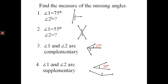Now let's find missing angles. Number one: angle one is 75 degrees — find angle two. Hint: they're supplementary. Angle two is 105 degrees, because 180 minus 75 equals 105. Check: 105 plus 75 is 180. For number two, these two angles are part of the four angles formed by two intersecting lines.